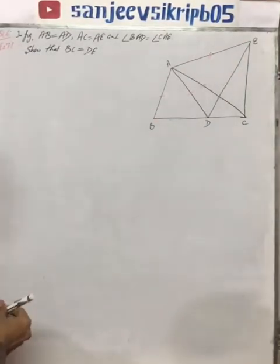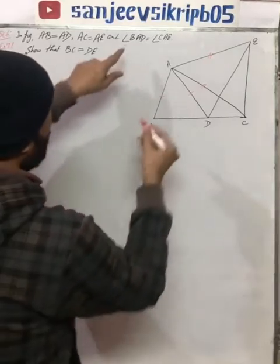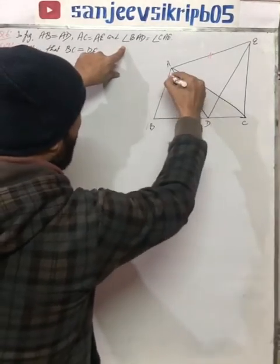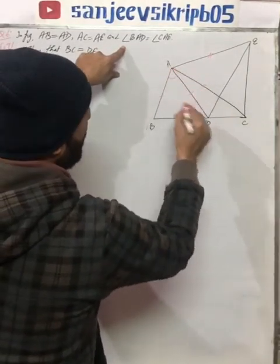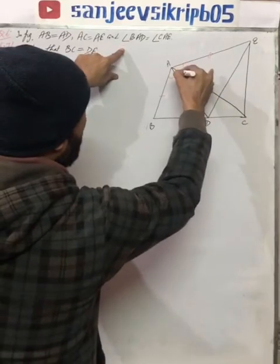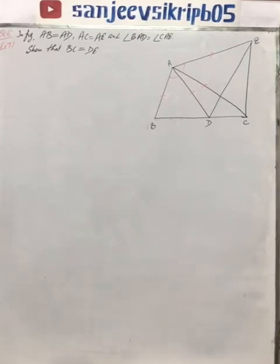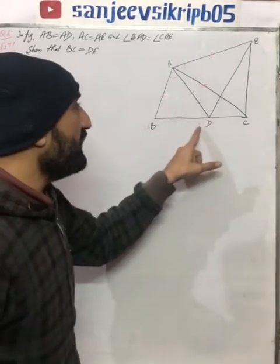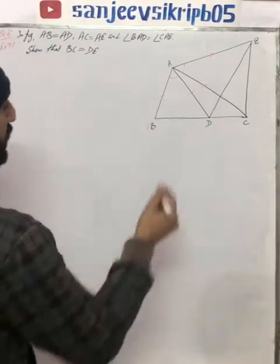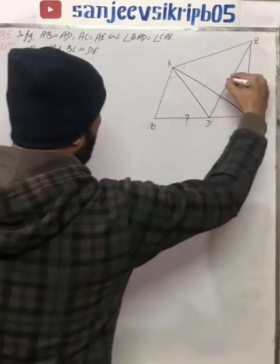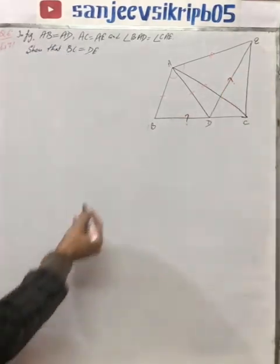We are given two sides equal and also angle BAD is equal to angle CAE. These two angles are given to be equal and we need to prove that BC is equal to DE. So let's prove it.